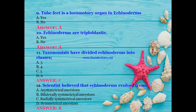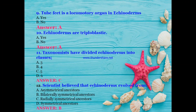Tube feet is a locomotory organ in echinoderms — yes, correct. Are echinoderms triploblastic? Yes, of course. Taxonomists have divided echinoderms into how many classes — three, four, five, or six? The answer is C — five classes. Scientists believed that echinoderms evolved from: asymmetrical, bilaterally symmetrical, radially symmetrical, or symmetrical ancestors? The answer is B — bilaterally symmetrical ancestors.